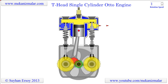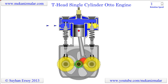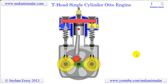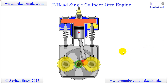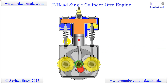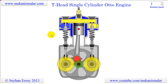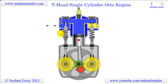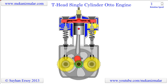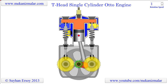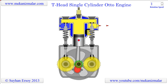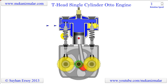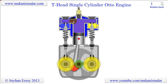Welcome to video tutorials of Mekonismiller. A T-flathead engine is an internal combustion engine with valves placed in the engine block beside the piston, instead of in the cylinder head as in an overhead valve engine. Its name is derived from the T-shape cylinder cross-section.